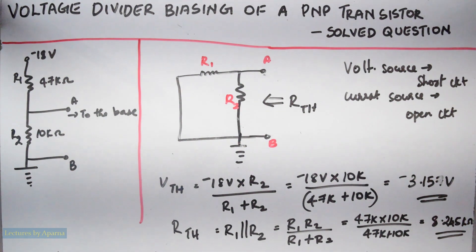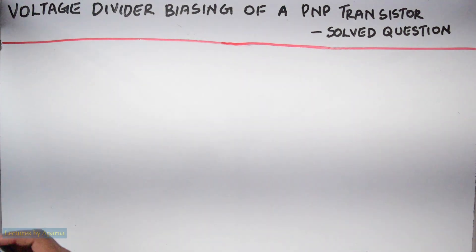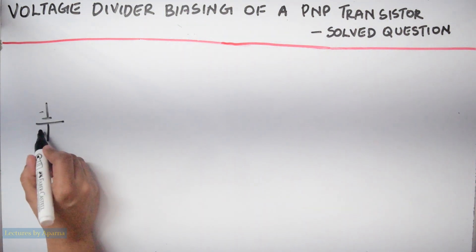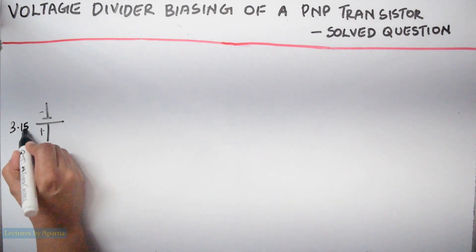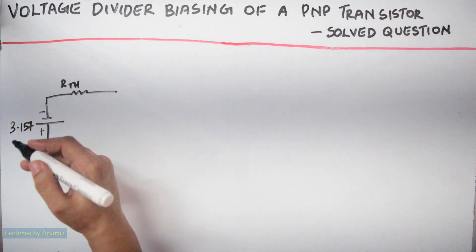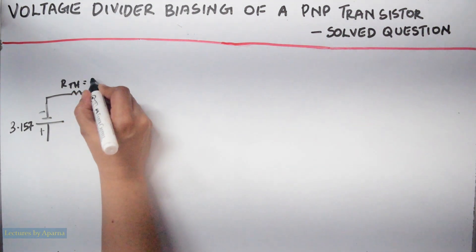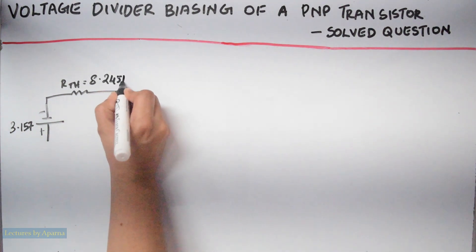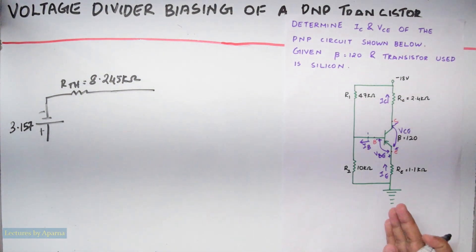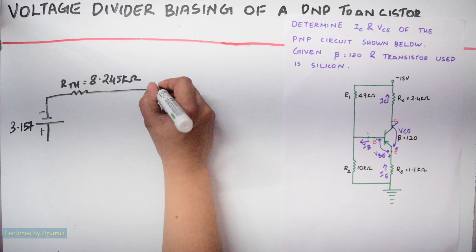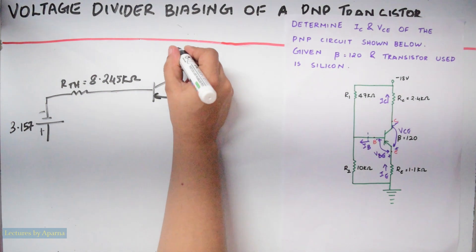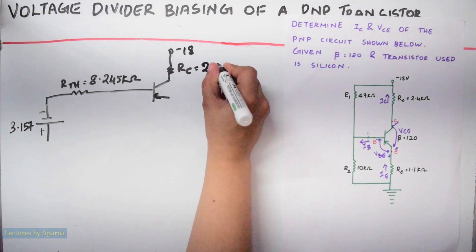Now we have to draw the Thevenin's equivalent circuit. First connect VTH, which is minus 3.157V — connect the minus terminal first, then plus, giving minus 3.157V. RTH is 8.245 kilohms. Then connect back the portion which we had removed in the first step: the PNP transistor, resistance RC. The voltage here is minus 18V. RC is 2.4 kilohms.